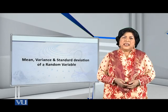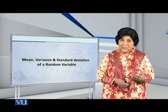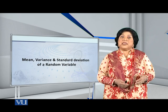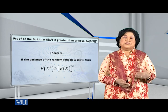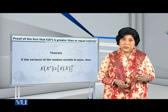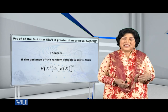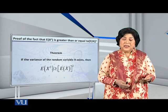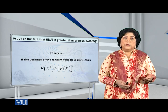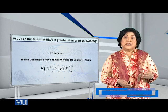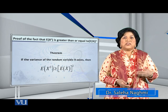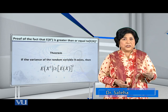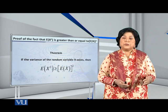Dear students, let me present to you an interesting theorem followed by its proof. The theorem is as follows: if the variance of a random variable X exists, then the expected value of X squared is greater than or equal to the square of the expected value of X. As you can see on the screen, E[X²] ≥ (E[X])².